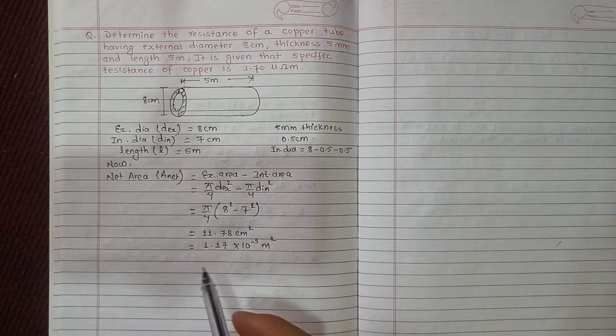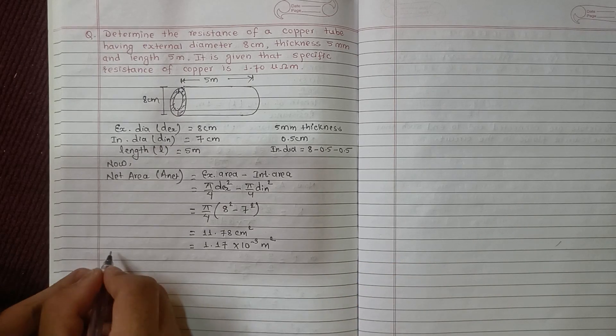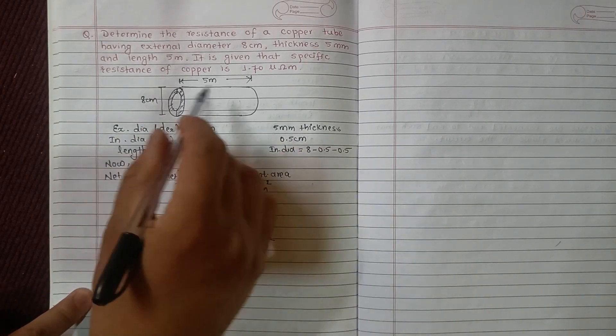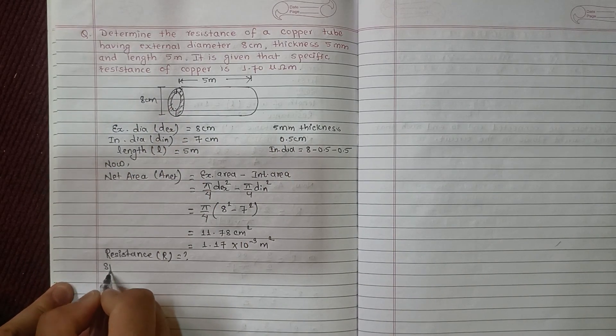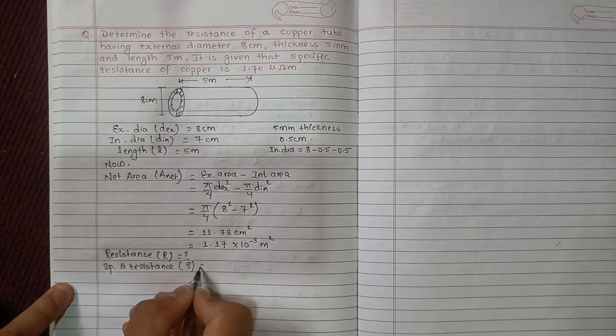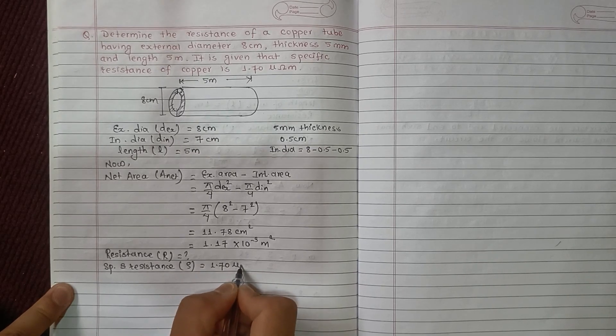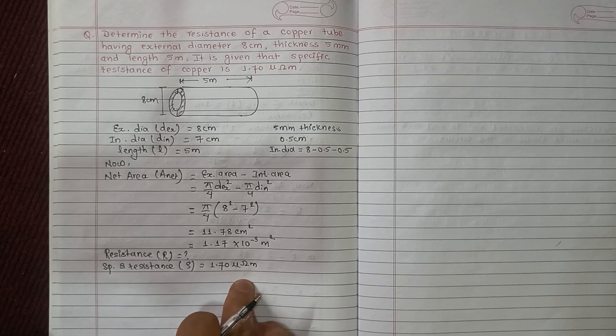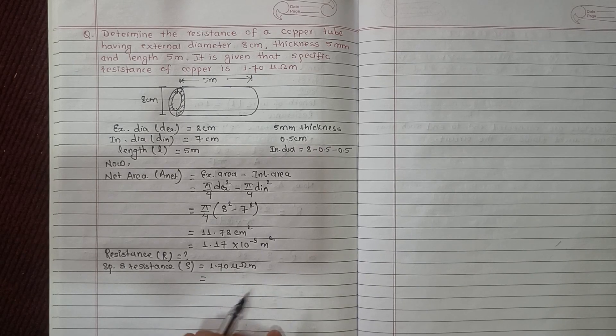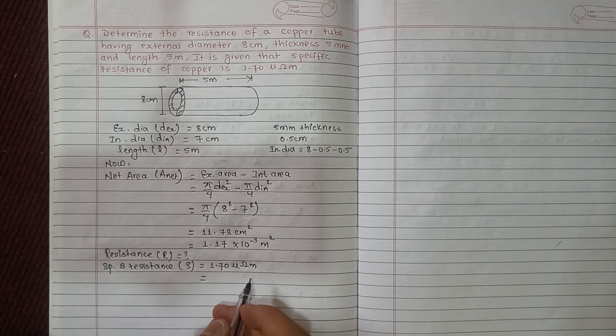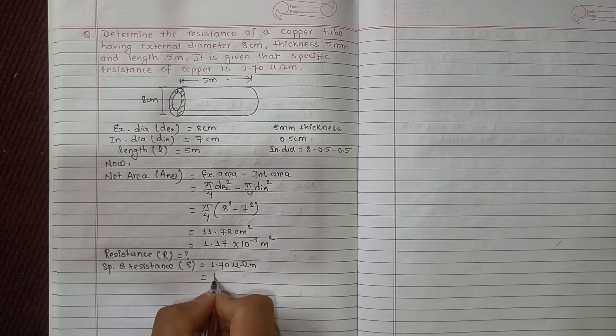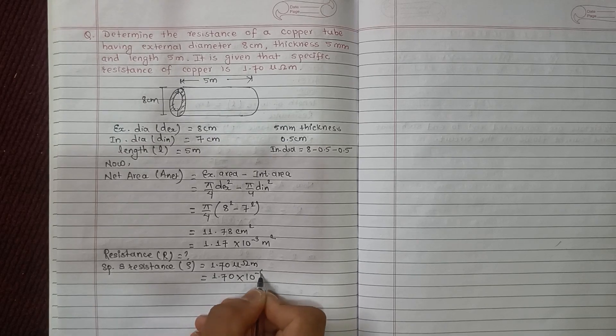Now let's find the resistance. Resistance R is given by specific resistance ρ times length divided by area. The specific resistance is 1.70 micro ohm meter. Micro means 10 to power minus 6, so this is 1.70 times 10 to the power minus 6 ohm meter.